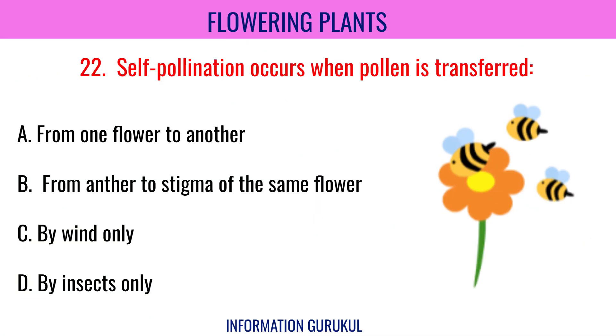Self-pollination occurs when pollen is transferred from the anther to the stigma of the same flower.